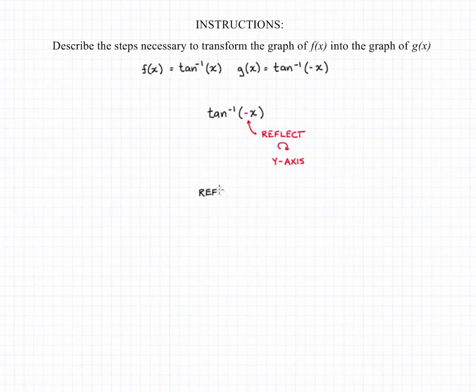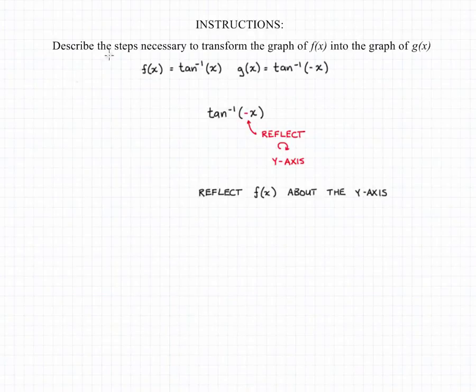So the answer to our question is that the step necessary to take the graph of f of x and transform it into the graph of g of x is that we would have to reflect the graph of f of x around, or about, the y-axis.